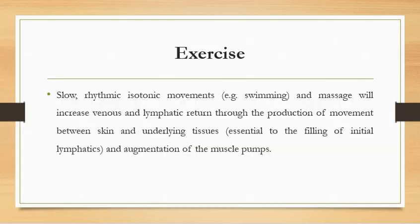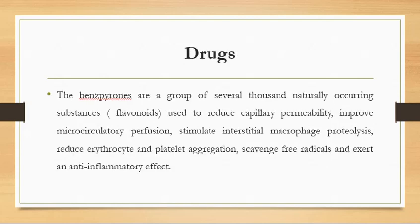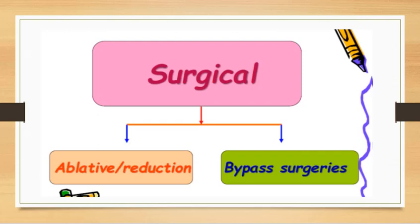Slow, rhythmic, isotonic movements such as swimming are recommended, as they increase venous and lymphatic return through movement between skin and underlying tissue, which is essential for filling of initial lymphatics and augmentation via muscle pumps. The only drug prescribed in lymphedema is benzopyrones — naturally occurring substances (flavonoids) that reduce capillary permeability, improve microcirculatory perfusion, stimulate interstitial macrophage proteolysis, and reduce erythrocyte and platelet aggregation.